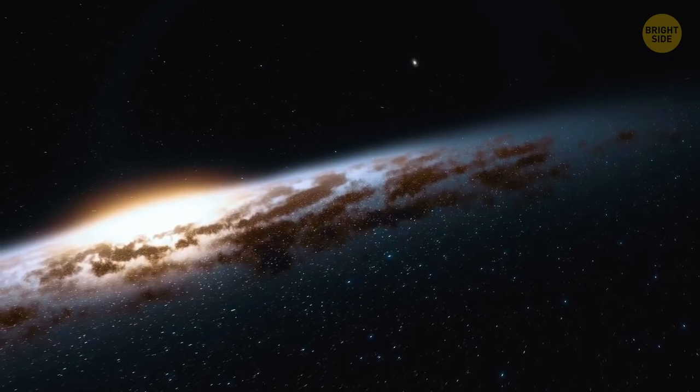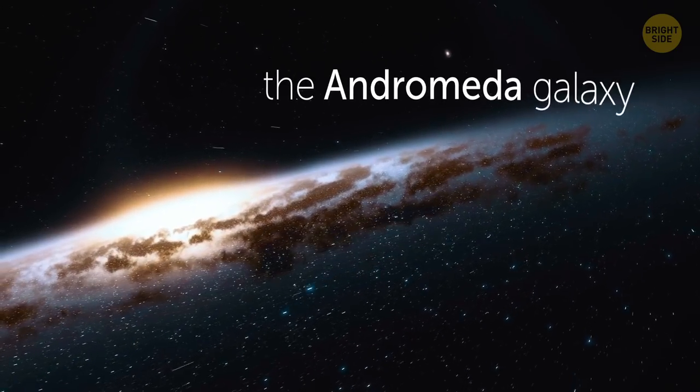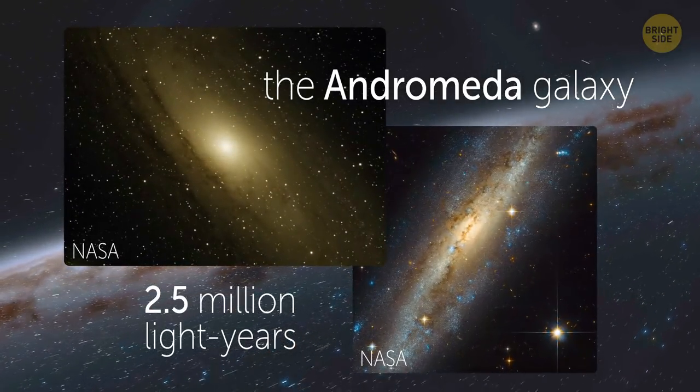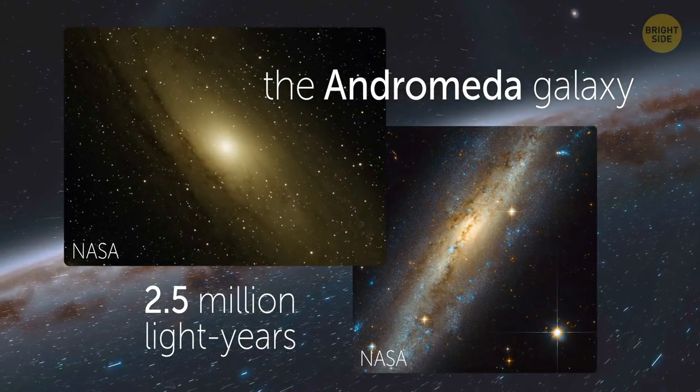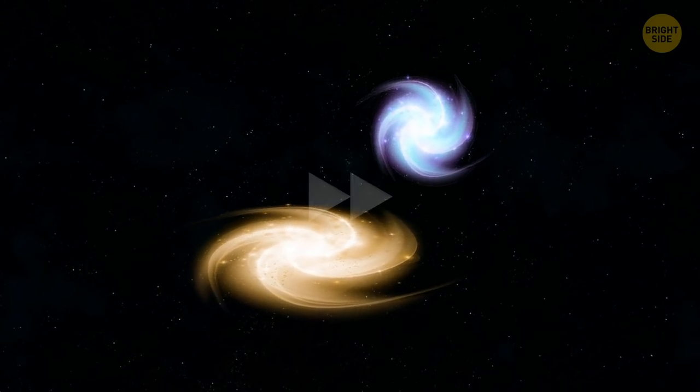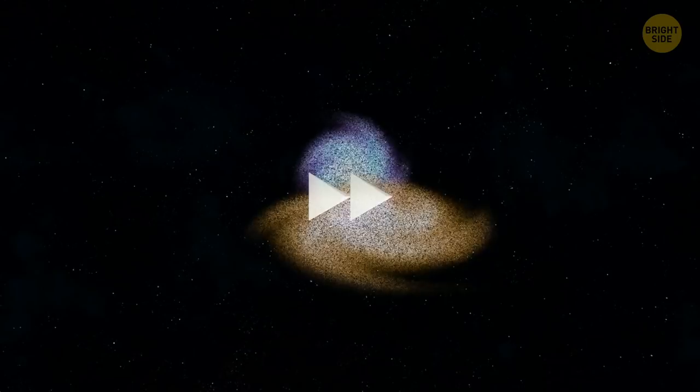The closest neighbor to our Milky Way is the Andromeda galaxy. It's 2.5 million light years away, and you can see it on a clear night with an unaided eye. And by the way, in a little more than 4 billion years, our galaxy will collide with the Andromeda galaxy. According to some predictions, the galaxies won't survive, but our solar system will. Place your bets.